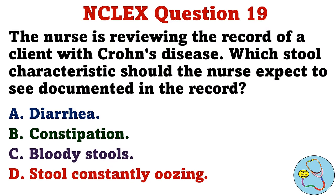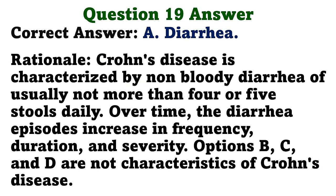The nurse is reviewing the record of a client with Crohn's disease. Which stool characteristic should the nurse expect to see documented in the record? A. Diarrhea. B. Constipation. C. Bloody stools. D. Stool constantly oozing. The correct answer is A: diarrhea. Crohn's disease is characterized by non-bloody diarrhea of usually not more than 4 or 5 stools daily. Over time, the diarrhea episodes increase in frequency, duration, and severity. Options B, C, and D are not characteristics of Crohn's disease.